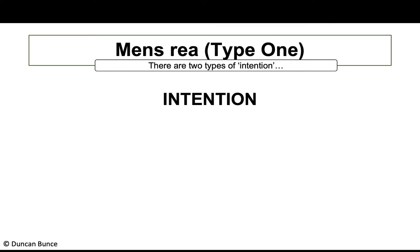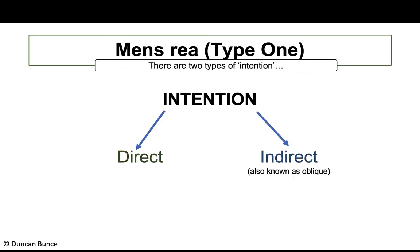Moving to the first type of mens rea — one you'll most commonly see alongside recklessness. There are two types of intention: the first is direct, and the second is indirect, which we also call oblique.